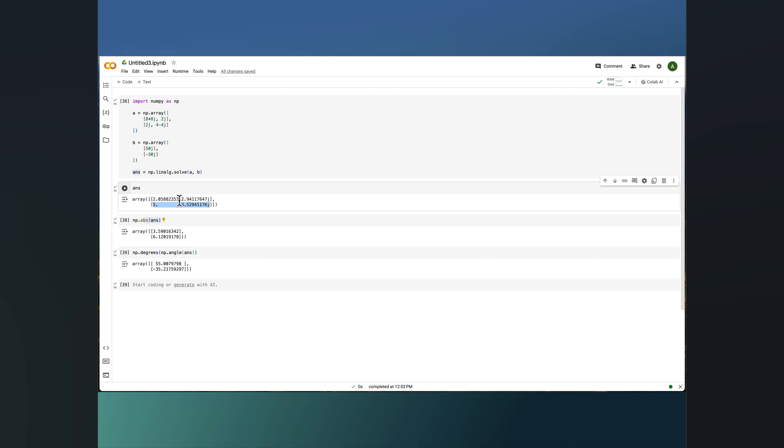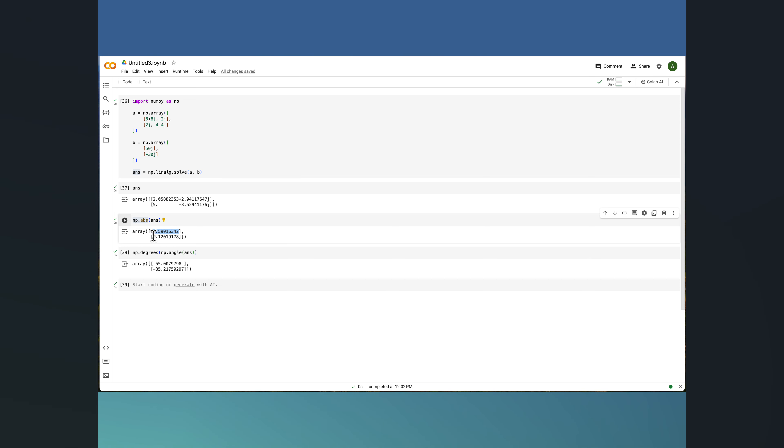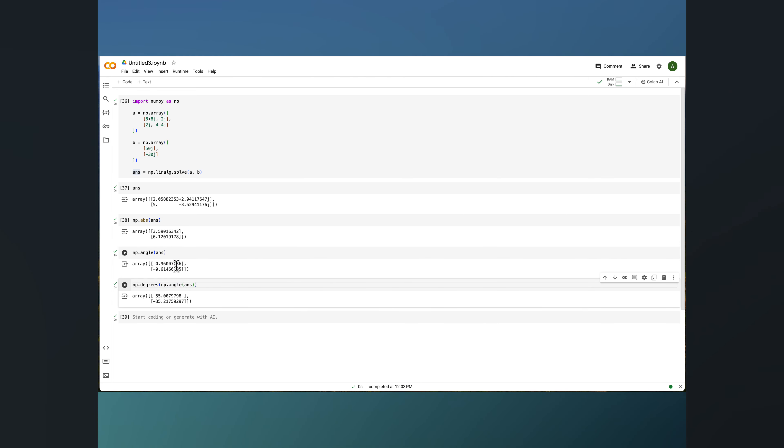For this particular example they're both in rectangular form. If I want to convert them I can either use my calculator or maybe since I'm already in Python I can just convert it. It's as easy as calling a function called abs for absolute for the answers and it gives me the magnitude of I1 and the magnitude of I2. Also we can call what we call the angle. For example we can just say in numpy angle of the answer and it will give me the phases.